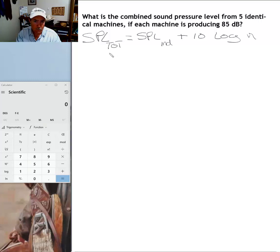SPL with a subscript TOT—that's for sound pressure level total. You could use sound pressure level combined, but normally when you see this formula, it's SPL with a subscript TOT. But that's what we're calculating: the combined sound level or the total sound level produced by these five machines.